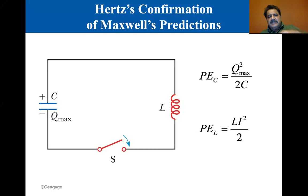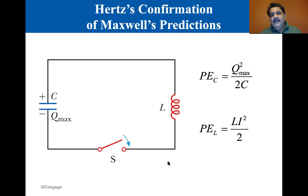Let's go back to the PowerPoint. So this is a tank circuit and it does oscillate back and forth. This was Hertz verified some of Maxwell's predictions and he also was able to transmit a signal across air using the ideas of Maxwell. The resonant frequency is one over two pi square root of LC. The transmitter consists of two spherical electrodes connected to an induction coil which provides short voltage surges to the sphere setting up oscillations in the discharge. The receiver is a nearby loop of wire containing a second spark gap.